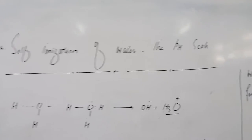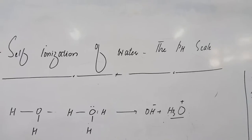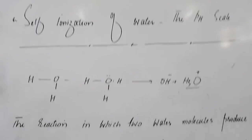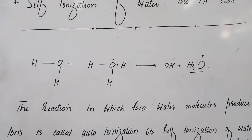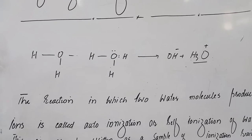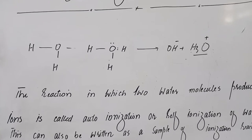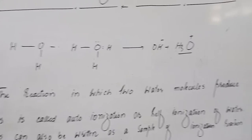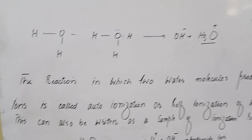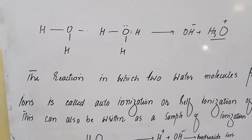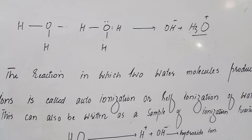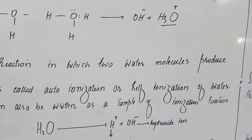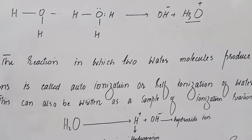This is self-ionization of water and the pH scale. This is the reaction in which two water molecules produce ions, also called auto-ionization or self-ionization of water.